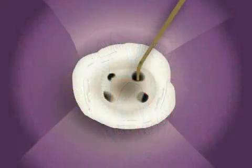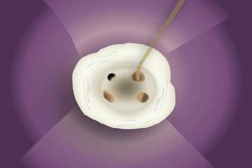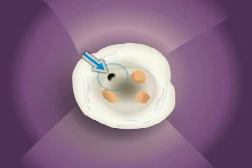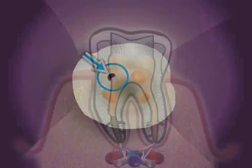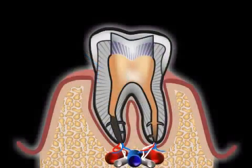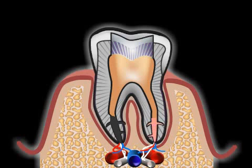The most frequent complication occurs when not all root canals are properly filled. As you can see in this animation, the tooth has four canals and only three are filled. Also, frequently canals are not filled completely down to the tip of the root, as can be seen in this image.